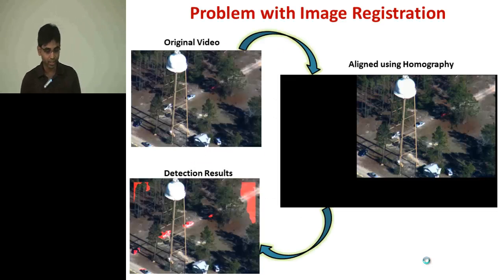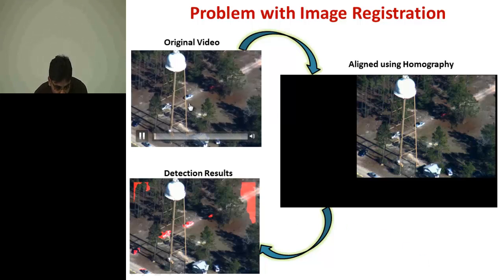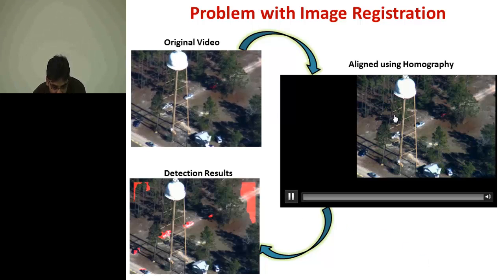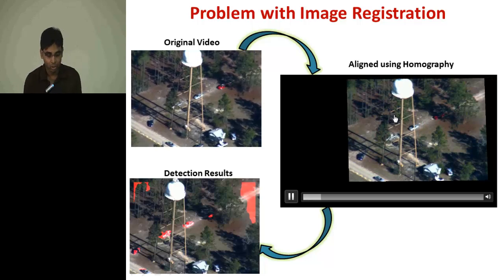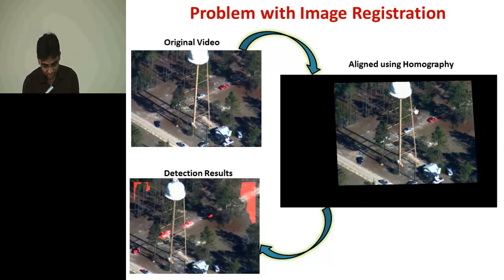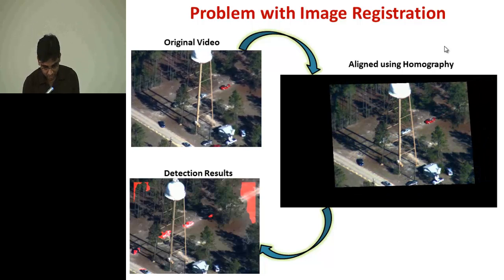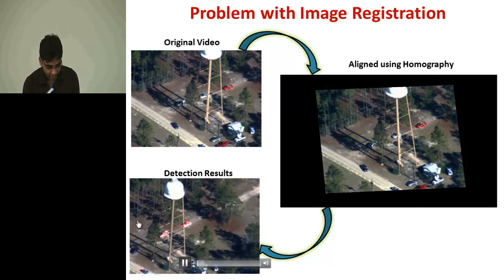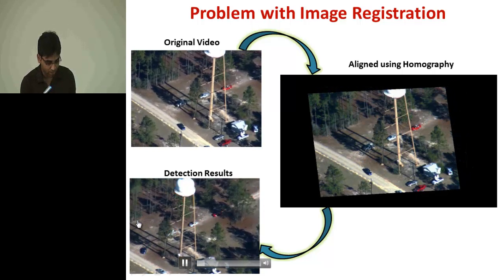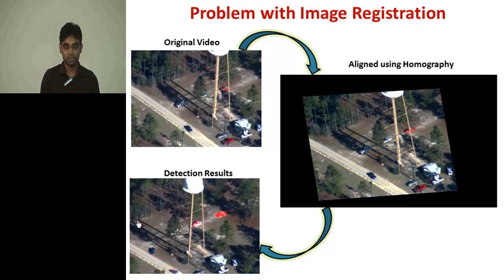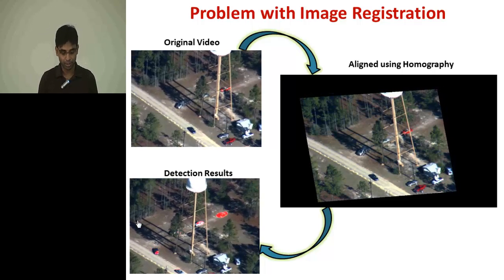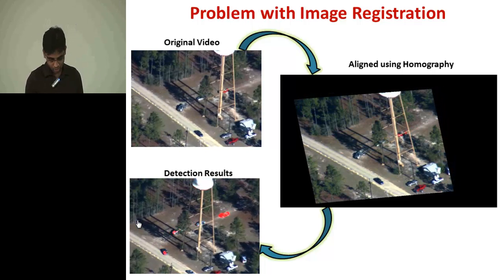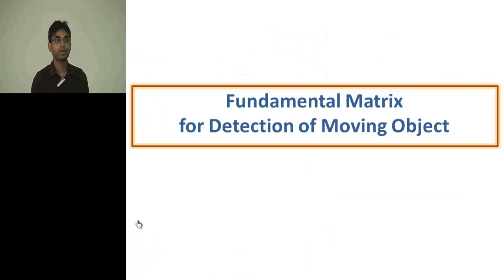This slide shows the problem with image-based registration approaches. The first window shows the original video, the second shows the homography-based alignment, and you can see there is a large out-of-plane object which appears to be moving and is incorrectly detected as a moving object in the background subtraction method.